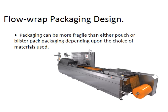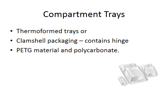Here's a typical flow wrapping machine. It's like a big roll of cling film on one end and another roll on the other end. The product moves along on a conveyor belt, is laid onto the lower layer of packaging, and then the upper layer gets clamped down onto it. It can be fragile depending on the choice of materials, but you can achieve high throughput with flow wrap packaging.